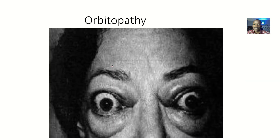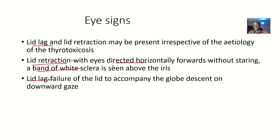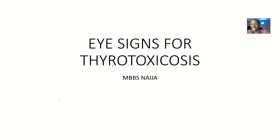The next one is orbitopathy. Orbitopathy is simply any disease condition of the eye associated with thyrotoxicosis. So those are the eye signs for thyrotoxicosis.